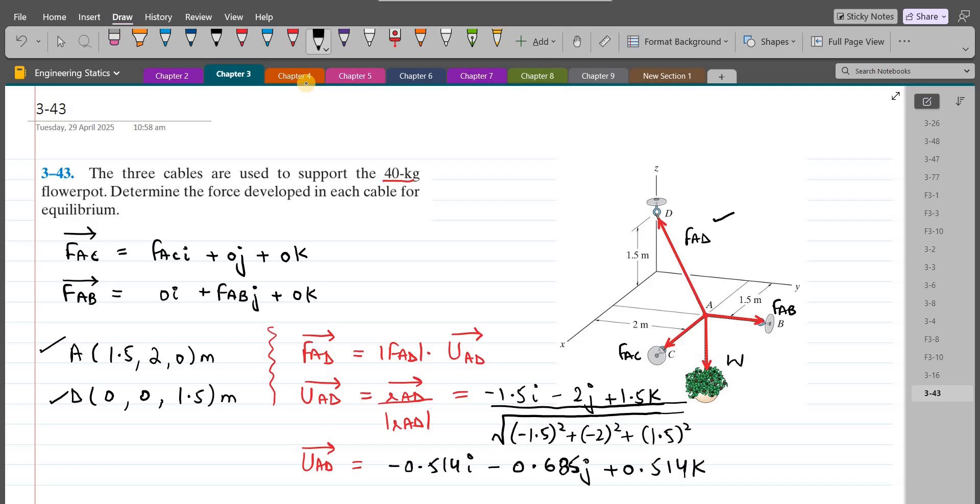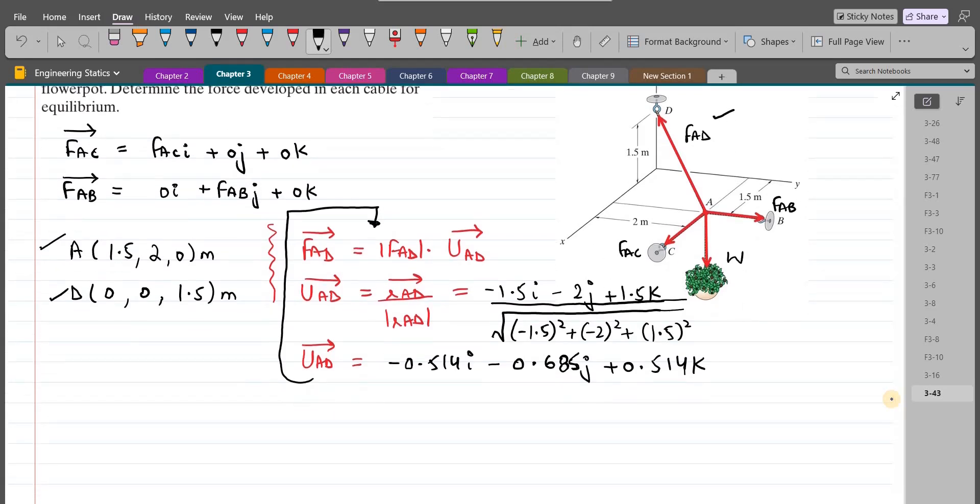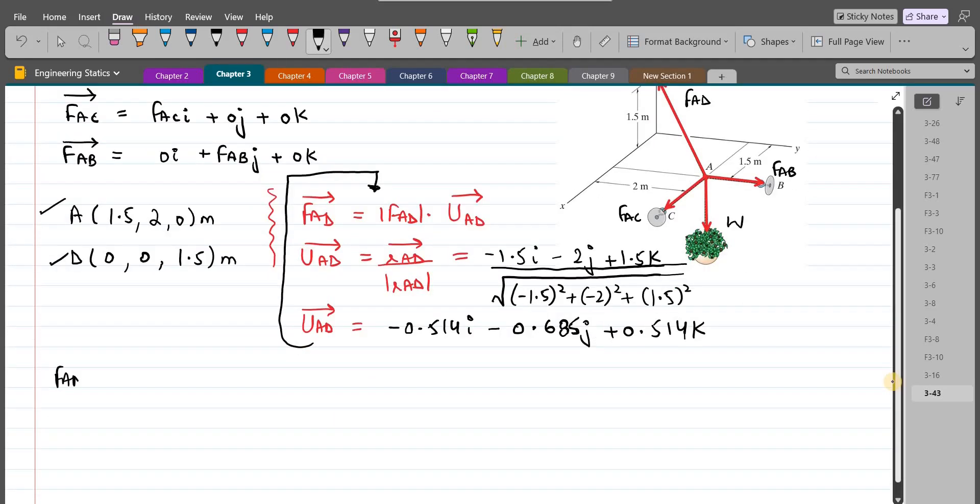So unit vector AD comes out to be negative 0.514I negative 0.685J plus 0.514K. Now we can substitute the unit vector AD into this equation. So FAD in terms of Cartesian vector form becomes negative 0.514FADI negative 0.685FADJ plus 0.514FADK.